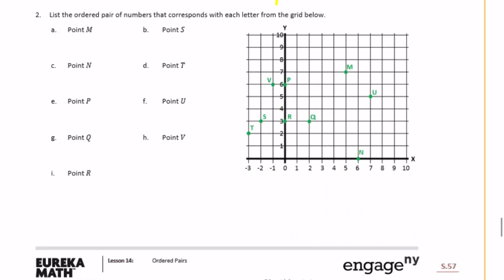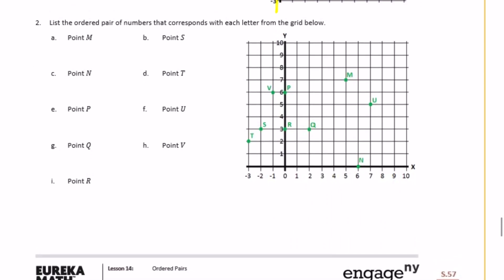Number 2. List the ordered pair of numbers that corresponds with each letter from the grid below. So this time they're giving us the letter, the point, and we need to get the coordinates. So point m. Here's point m. So m is over to 5 and then up to 7. So we would write it as 5, 7.